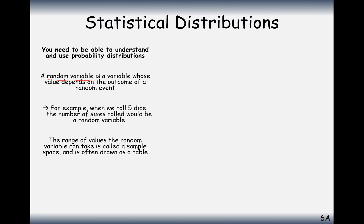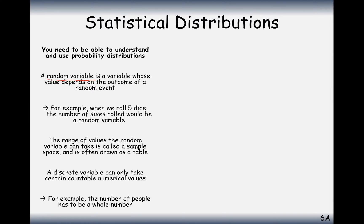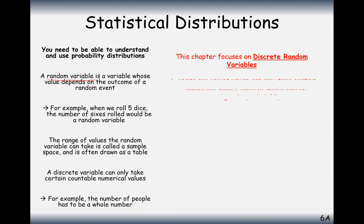The range of values a random variable can take is usually called a sample space and is often drawn in a table. A discrete variable can only take certain countable numerical values — discrete meaning whole numbers, the same usage as in discrete data. For example, the number of people has to be a whole number. This chapter focuses on discrete random variables, which can only take certain numerical values, each of which can be assigned a probability — for example, the number of times a one is rolled when you roll a dice ten times.